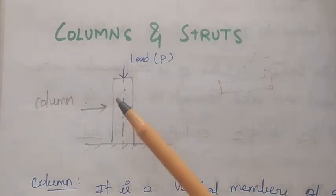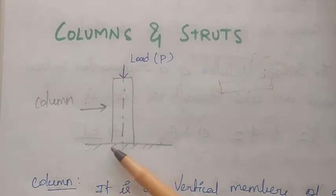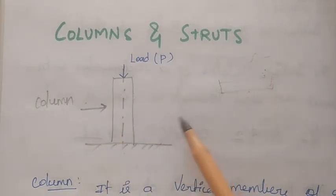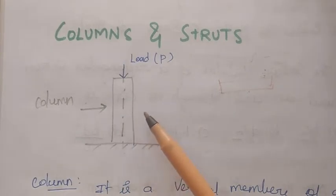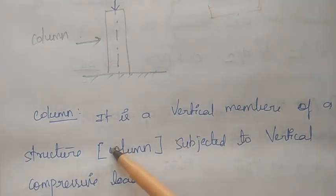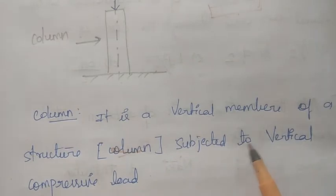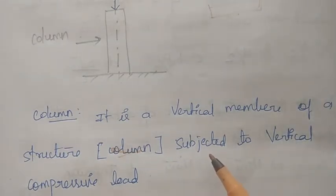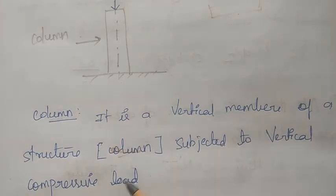This is the column. We have attached a column to the column. In a rough way, we have a column. The definition of the technical column is: it is a vertical member of a structure. A beam is a horizontal member. The column is a vertical member that carries a vertical load.